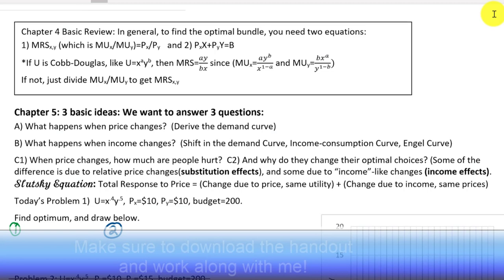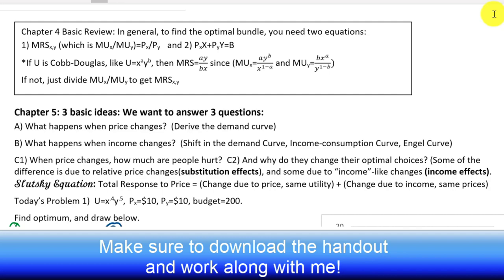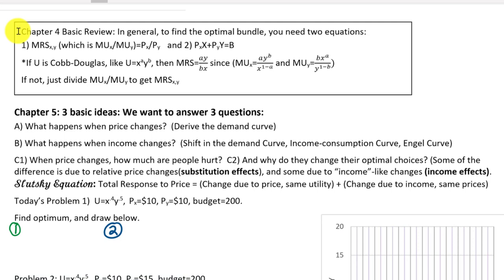Today we're going to assume that you know how to maximize utility. You've done this before using a Cobb-Douglas utility function and we're going to use a shortcut method to get the marginal rate of substitution instead of doing it the long way. We're using Perloff's textbook: chapter 4 is about utility and utility maximization, and in chapter 5 we use those ideas to see where demand comes from.